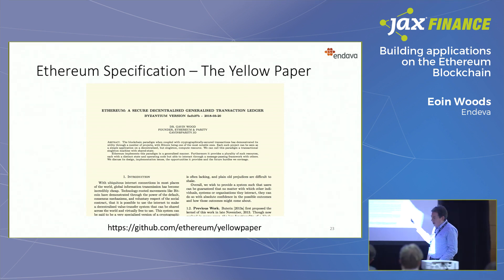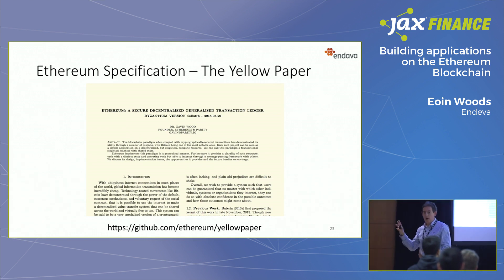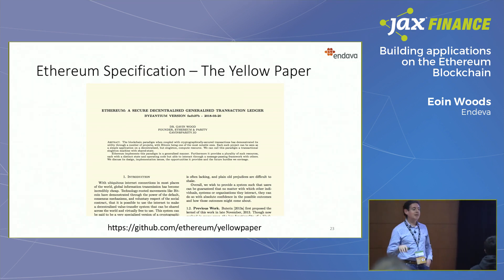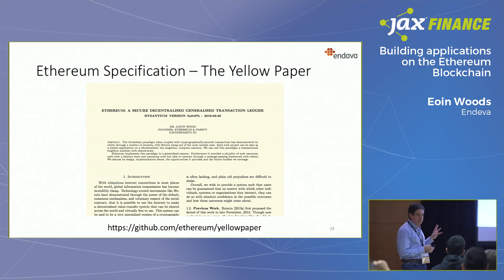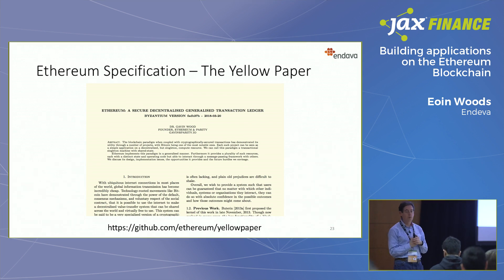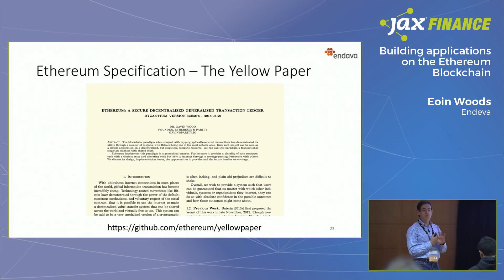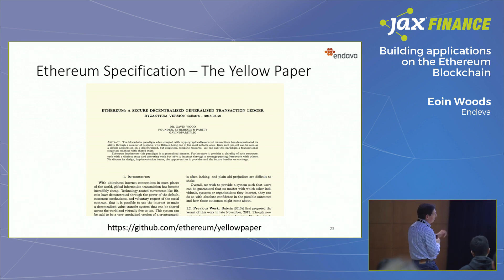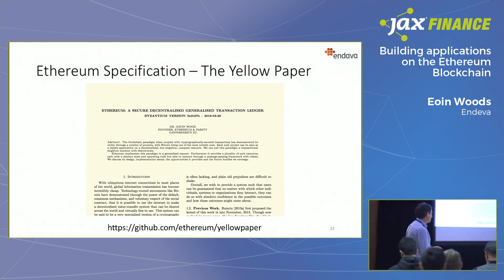The Ethereum yellow paper — written by Gavin Wood — is a surprisingly well-written academic paper explaining what the Ethereum system is. It also contains a very insightful description of Bitcoin as its first major section, explaining Bitcoin in very rigorous, clear terms to put Ethereum in context. It's on GitHub, always with a PDF of the latest version. It's written in LaTeX, but he generates the PDF every time he changes it.